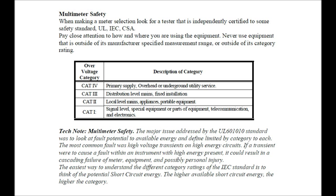The easiest way to understand the different category ratings of the IEC standard is to think of the potential short circuit energy. The higher the available short circuit energy, the higher the category. Guys, I can't stress this enough — very, very crucial.